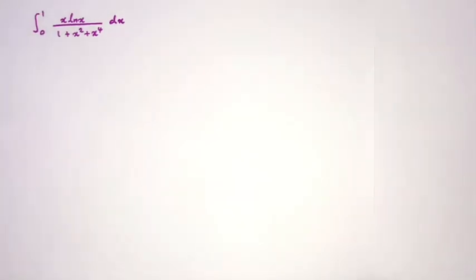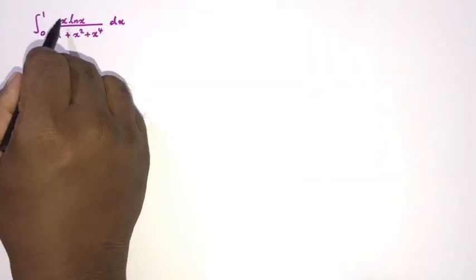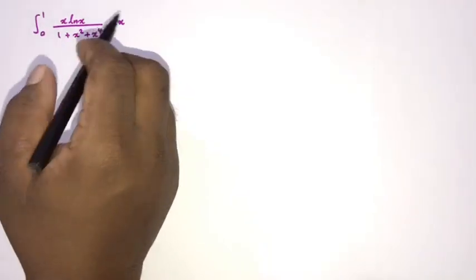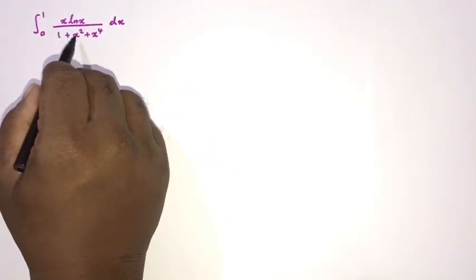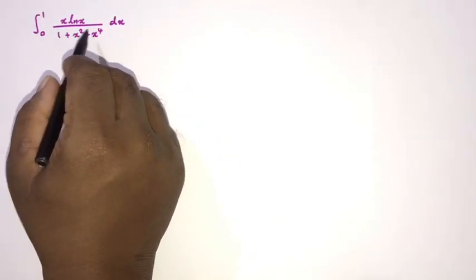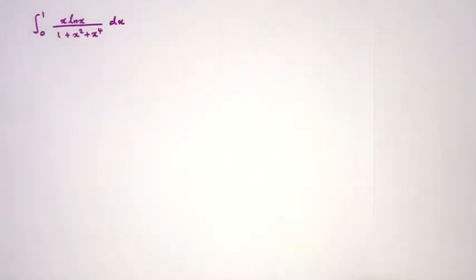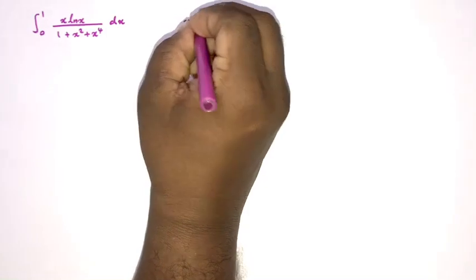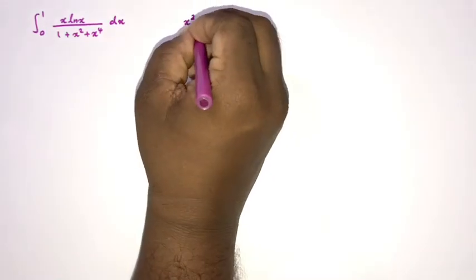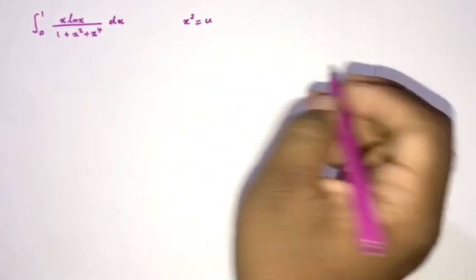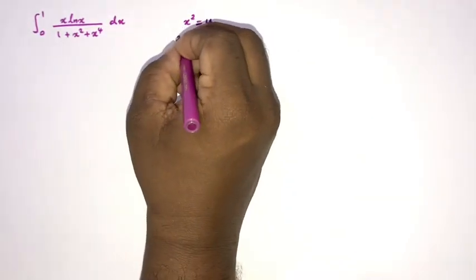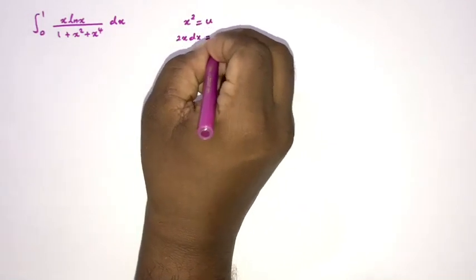How to begin? Here we have x times dx, and in the denominator we have x squared plus x squared raised to the second power. So we can take x squared equal to u — a u-substitution. With x² = u, differentiating gives 2x dx = du.